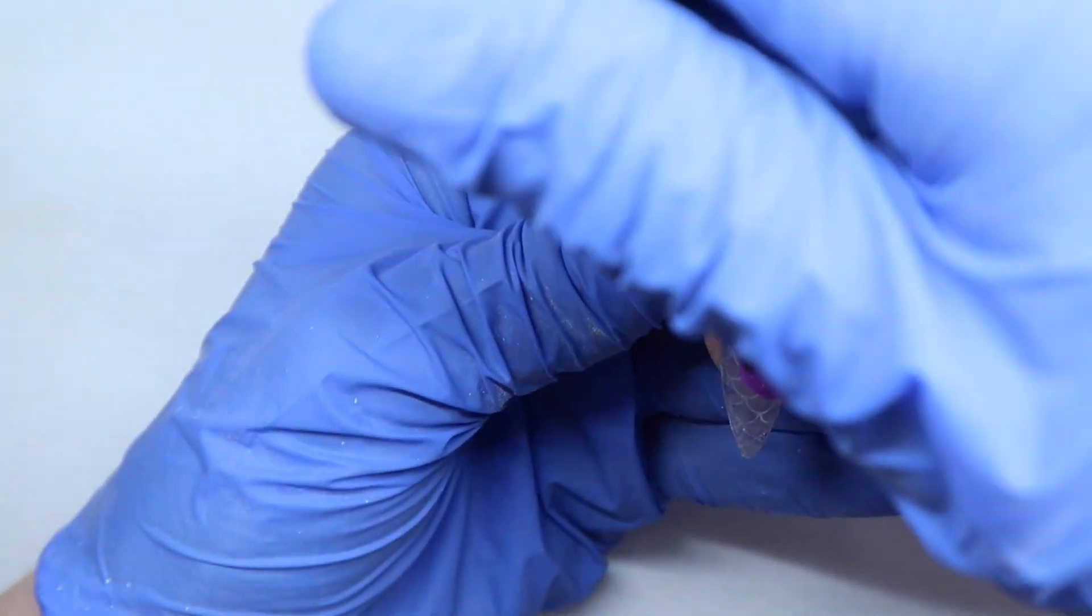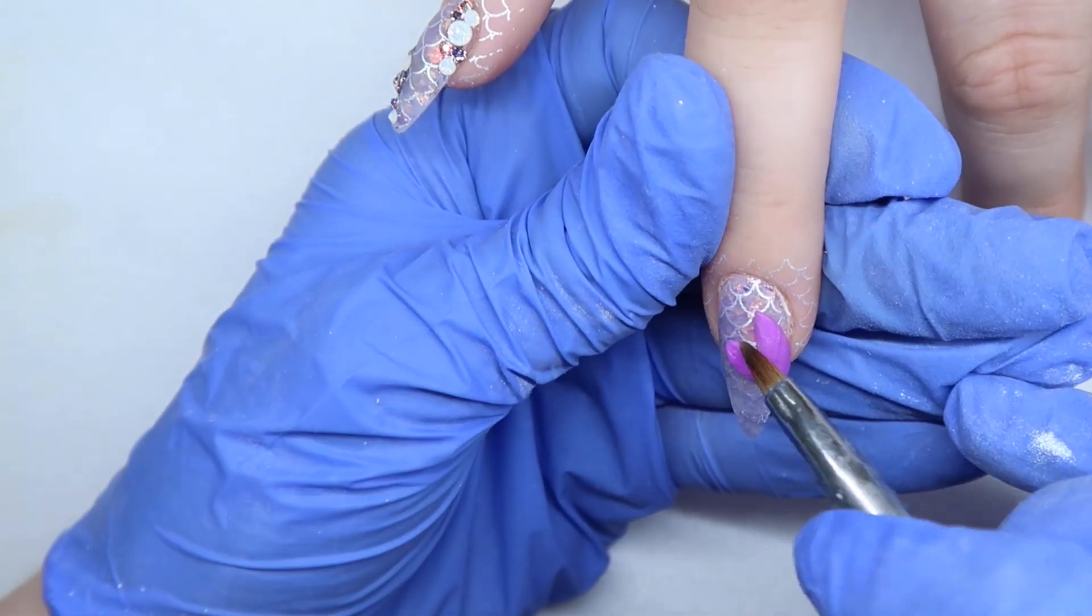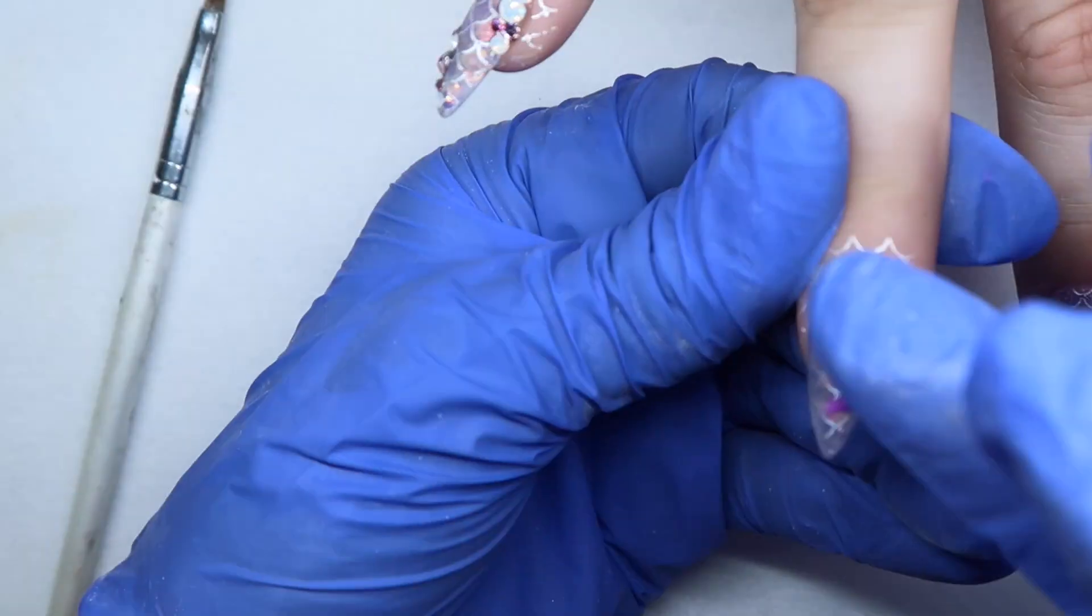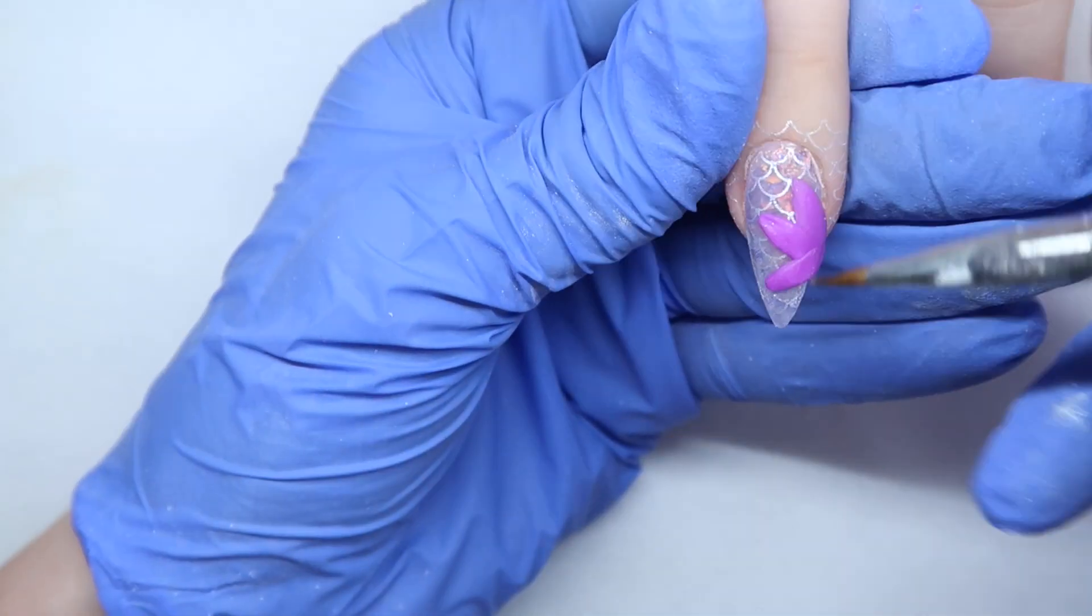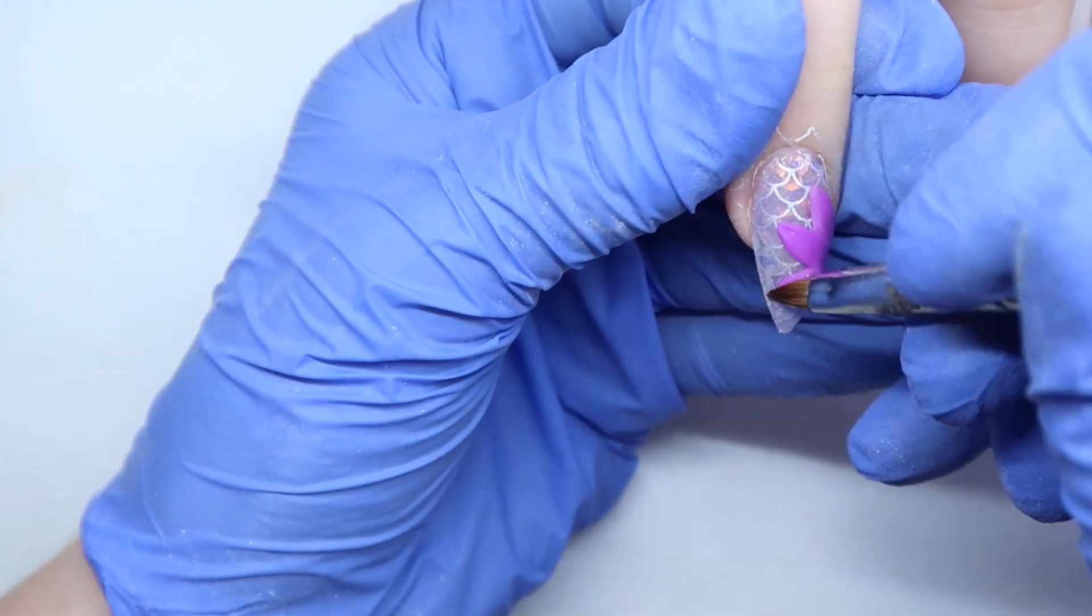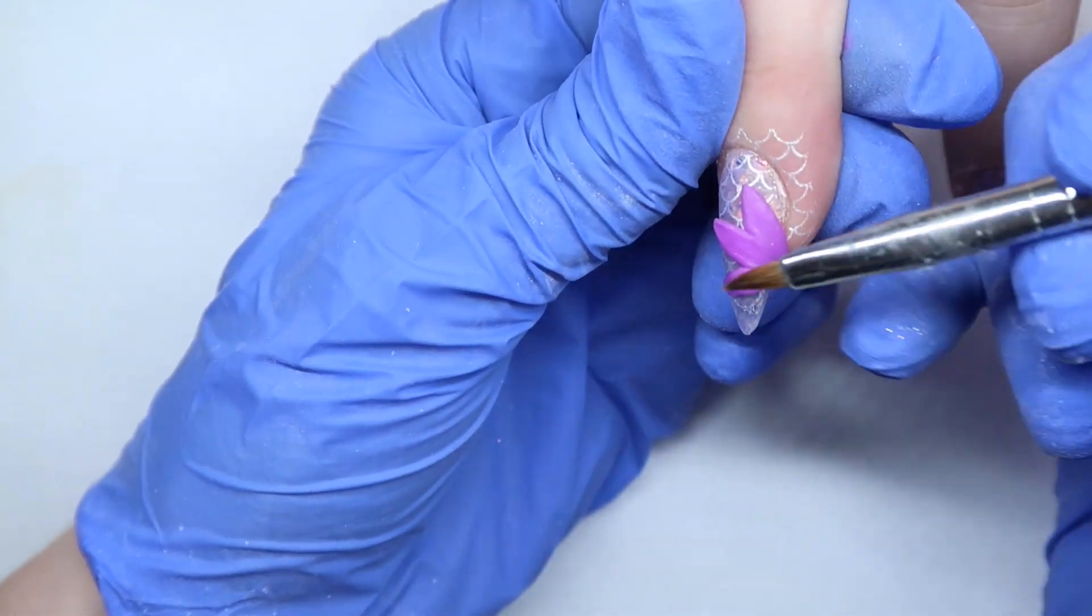So you're just going to use your fingers to ball up each piece and kind of roll it into a line. And then place it on the nail. And then you can use a little art brush and some alcohol, or you can use the Egoista brand Slip for their poly gel. And you're just going to use that to kind of maneuver your 4D gel into place.